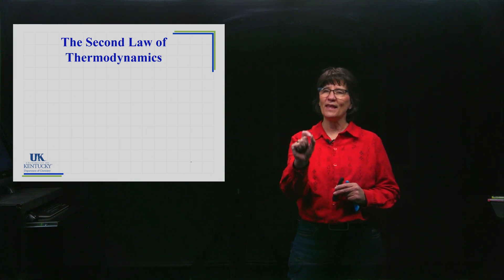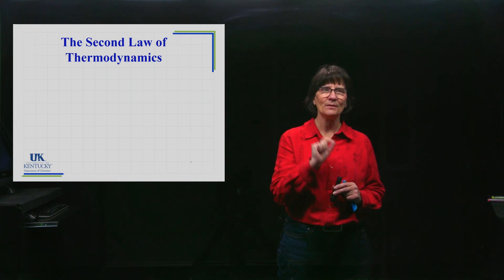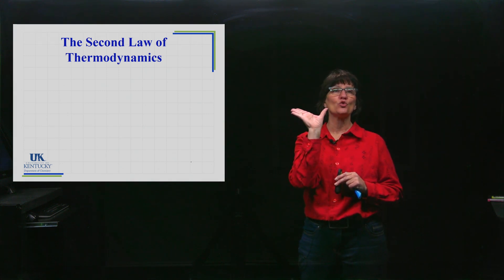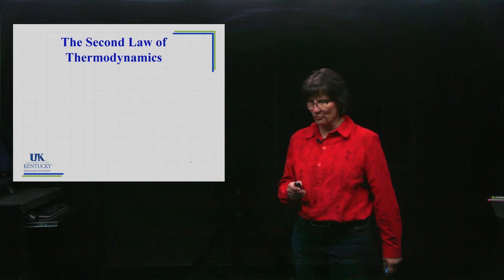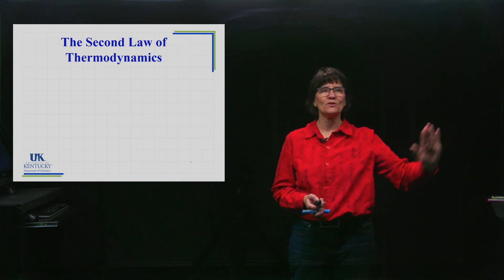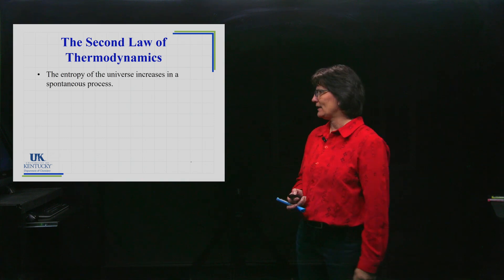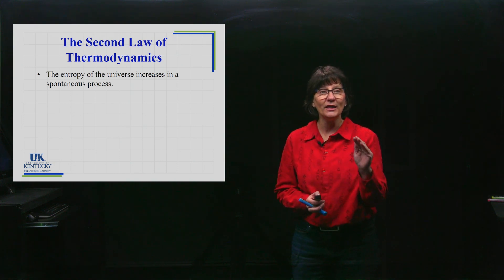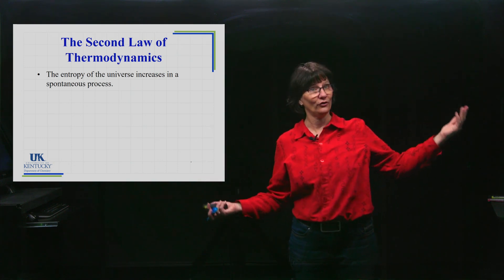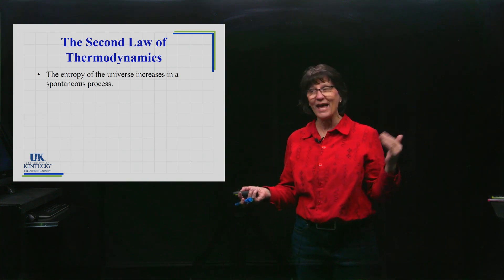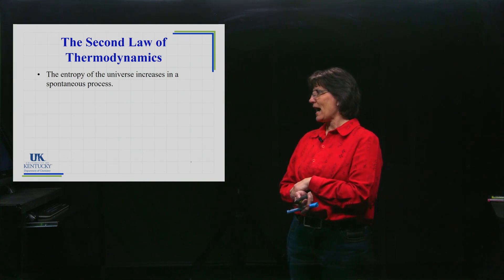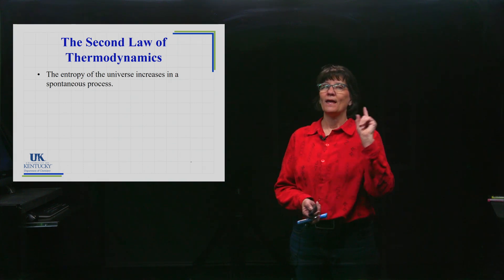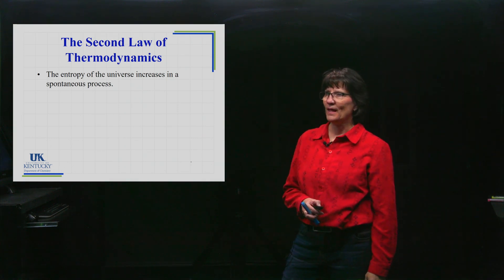The Second Law of Thermodynamics is not a hypothesis or theory — it is an observed truism with no exceptions. It says: if you want a perfect predictor of whether a process is spontaneous, all you need to know is the change in entropy of the universe. If delta S of the universe is positive — an increase in entropy — then that is a perfect predictor of spontaneity.